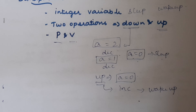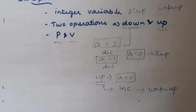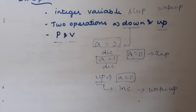We perform these two operations to make any process sleep or wake up. We can implement this semaphore variable in the producer-consumer problem, and not only there — we can also use it for any other process synchronization problem, which we will discuss later.